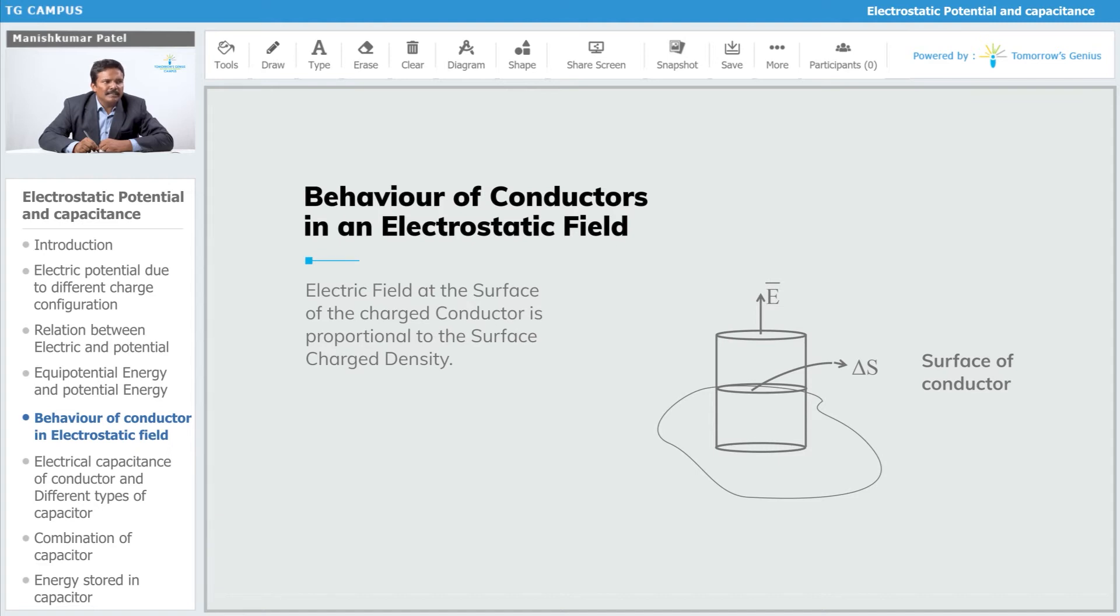Now, if I consider the electric field at the surface of your charged conductor, the charge is distributed on the surface of this conductor. How much flux is going to originate from this surface? Again, you can find that with the help of Gauss's law. We know that flux equals ∫E⃗·ds⃗ = q/ε₀.